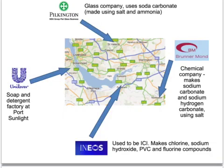Lever Brothers, now called Unilever, are based around Port Sunlight and have traditionally made soaps and detergents, but are now involved in all sorts of other industries. Pilkington Glass, based in St Helens, uses sodium carbonate, which is made by using salt and ammonia. Then there's Brennamond, which makes sodium carbonate and sodium hydrogen carbonate, again using salt.